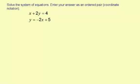Solve the system of equations. Enter your answer as an ordered pair in coordinate notation. x plus 2y equals 4. y equals negative 2x plus 5.